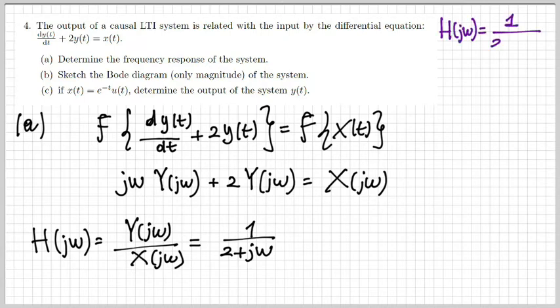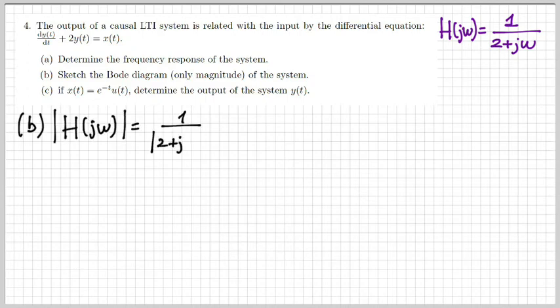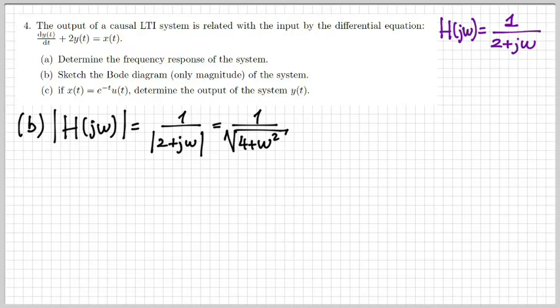So we have H(jω) = 1/(2 + jω). Now we need to sketch the magnitude of this frequency response. The magnitude of a complex function is the square root of the sum of the squared real and imaginary parts. So the magnitude is simply 1 over the square root of (4 + ω²).